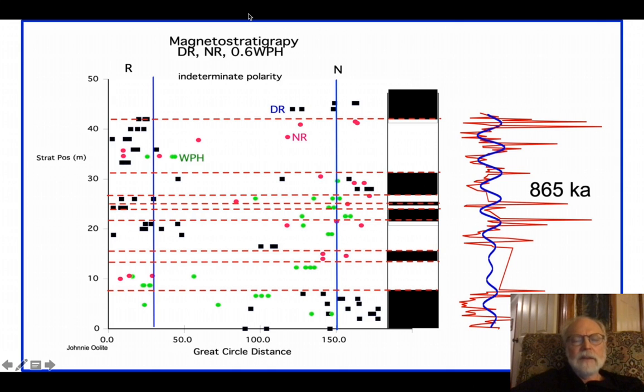and also the high-resolution time I had developed from the rock magnetic cyclostratigraphy to put together a very detailed combined magnetostratigraphy. DR is Desert Range, NR is Nopal Range, and WPH is Winter Pass Hill. The sediment accumulation rate was faster at Winters Pass Hills, so that's what that 0.6 is. It cuts it down, and then I could plot them all together and put together a very high-resolution magnetostratigraphy. It's the best I could. The data was of moderately good quality.